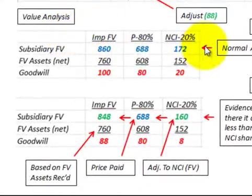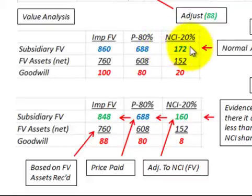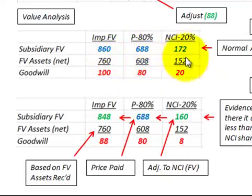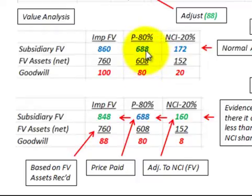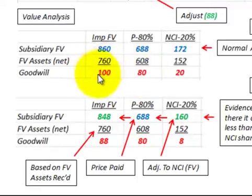Looking at our value analysis, for our normal assignment we would have the subsidiary fair value of $860,000, proportioned out 80% to the parent for $688,000, and the non-controlling interest at 20% or $172,000. The fair value of the net assets of $760,000 is also proportioned out — 80% to the parent for $608,000, and the non-controlling interest for $152,000. Taking the difference gives us goodwill: $80,000 for the parent and $20,000 for the non-controlling interest, totaling $100,000.